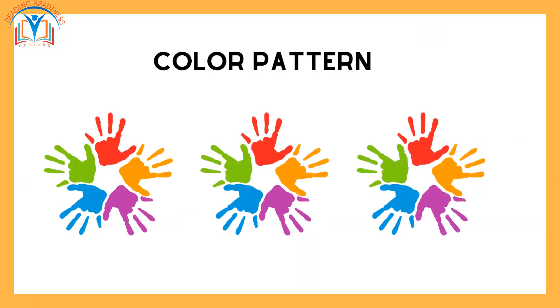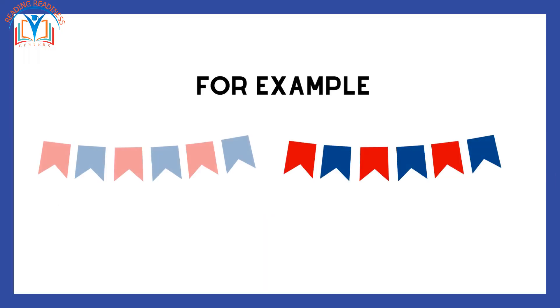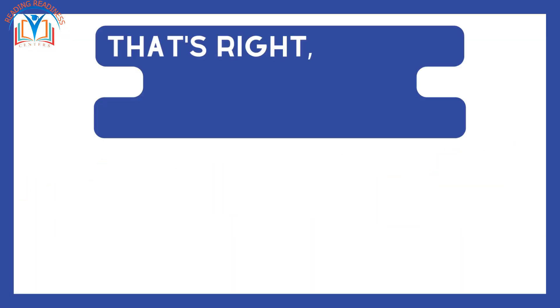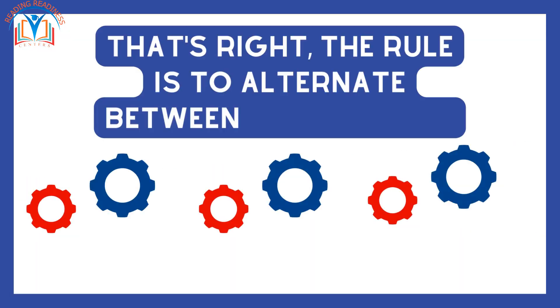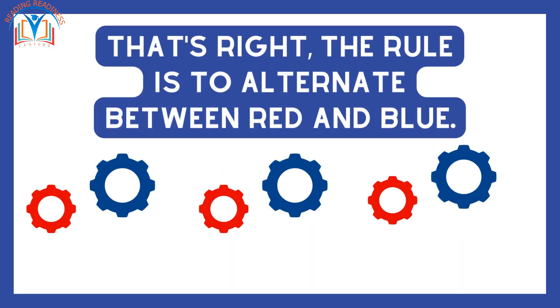A color pattern is a sequence of colors that follows a rule. For example, red, blue, red, blue is a color pattern. Can you tell me what the rule is? That's right, the rule is to alternate between red and blue.